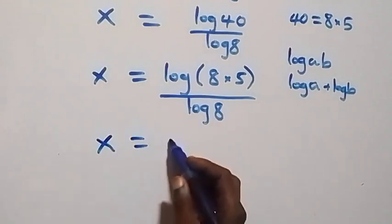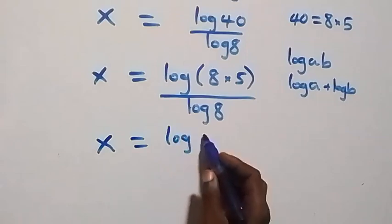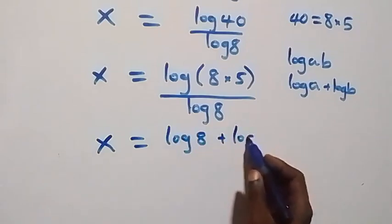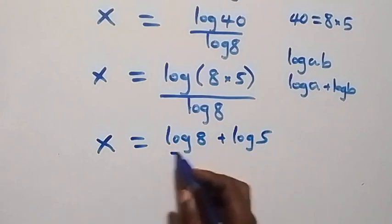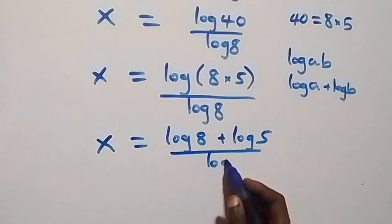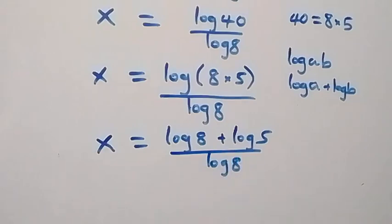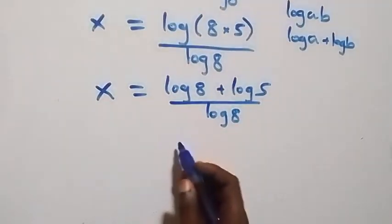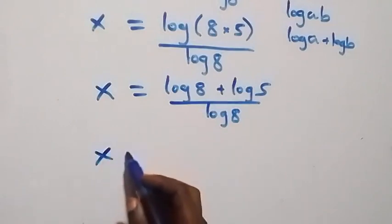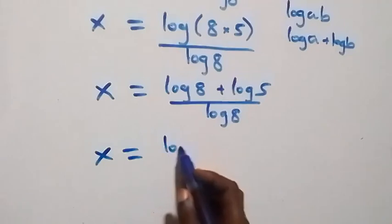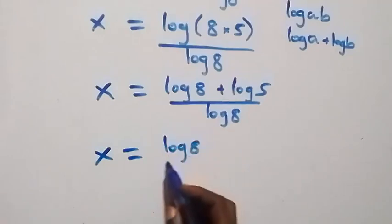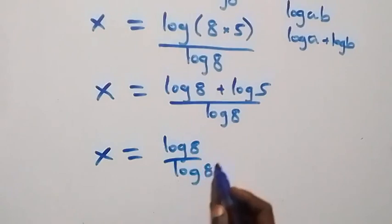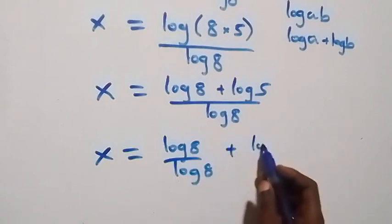Then we can separate this as well, and we have x equals to log 8 plus log 5, all over log 8. We can separate this fraction, so x equals to log 8 over log 8 plus log 5 over log 8.